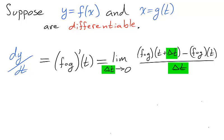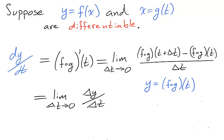But instead of h, we'll talk about delta t, which represents the change in t. Since y is equal to the composition of f of g at t, our limit can be written as delta y over delta t.